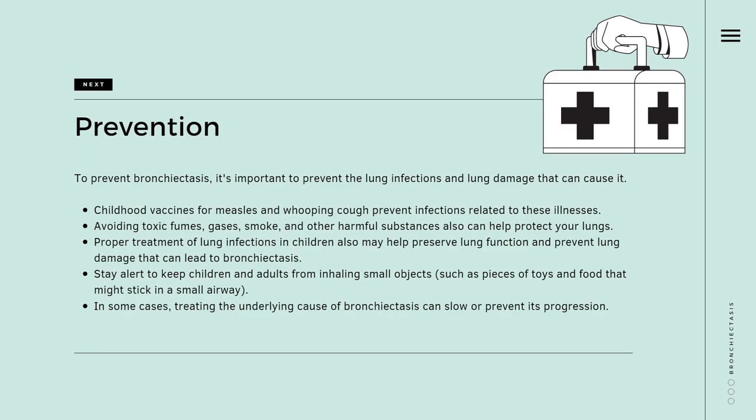What are the preventions for bronchiectasis? To prevent bronchiectasis, it is important to prevent the lung infections and lung damage that can cause it. Childhood vaccines for measles and whooping cough prevent infections related to these illnesses and reduce complications such as bronchiectasis. Avoiding toxic fumes, gases, smoke, and other harmful substances can also help protect your lungs. Proper treatment of lung infections in children may help preserve lung function and prevent lung damage. Stay alert to keep children and adults from inhaling small objects such as pieces of toys and food that might stick in a small airway. If you think your child or someone else has inhaled a small object, seek prompt medical care. In some cases, treating the underlying cause of bronchiectasis can slow or prevent its progression.